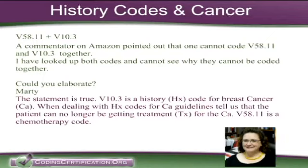V10.3 means they had breast cancer and they're no longer getting treatment, unlike V58.11, which is a chemotherapy code. So if a person is getting chemotherapy, they're getting treatment for their cancer, and therefore a history code is not applicable.